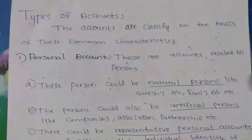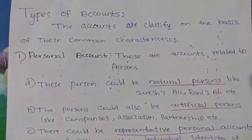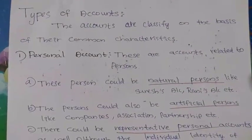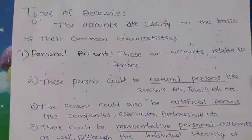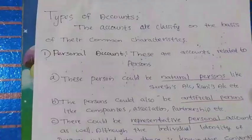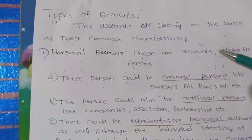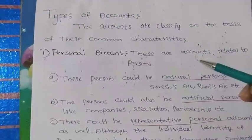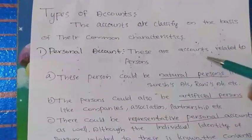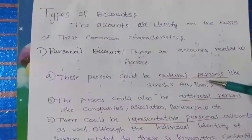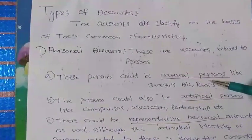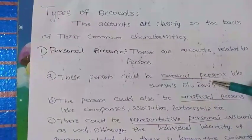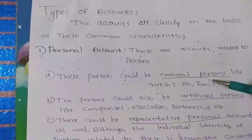The first one is Personal Account. Persons who are related to the account are classified into it. We can divide the personal account. The first one is Natural Person — for example, Agil, Arun, Rahul, Sissi.